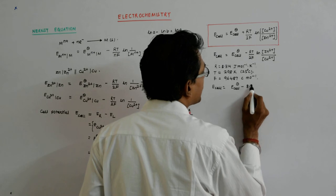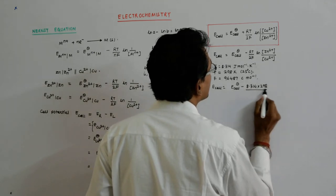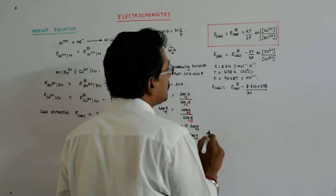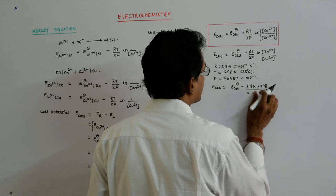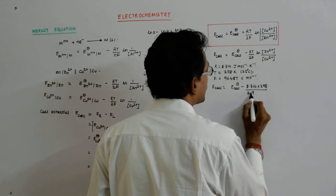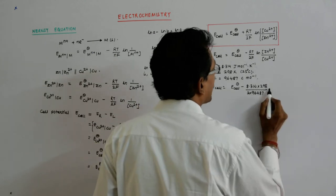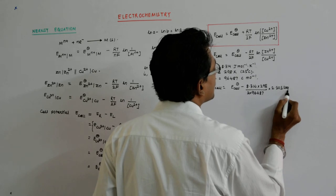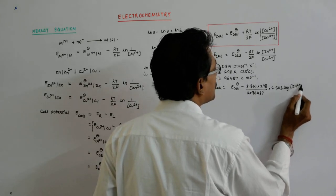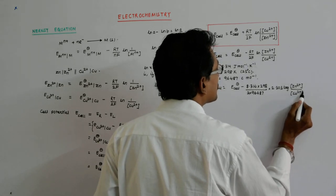So I'll put 8.314 into 298 upon 2 into 96487 into 2.303 log Zn²⁺ divided by Cu²⁺.